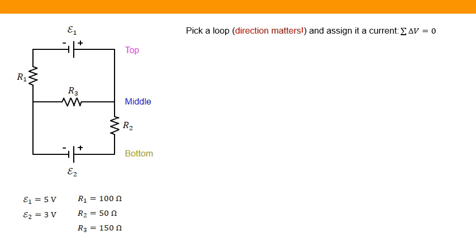We're going to pick a loop. The direction of our loop still matters. But to that loop, we're going to assign a current. And that's where this gets different.